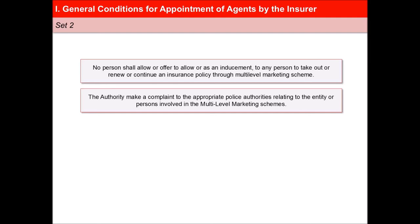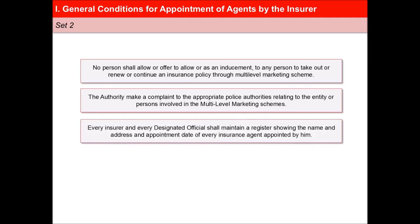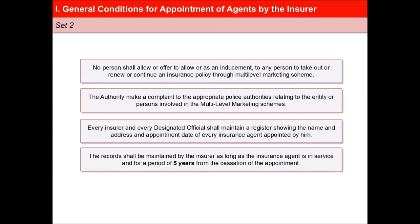Every insurer and every designated official shall maintain a register showing the name, address, and appointment date of every insurance agent appointed by him. The records shall be maintained by the insurer as long as the insurance agent is in service and for a period of 5 years from the cessation of the appointment.